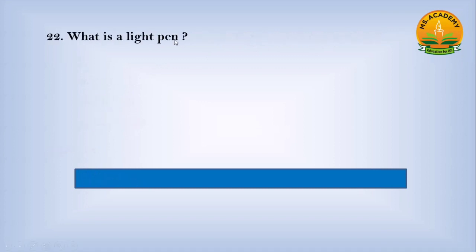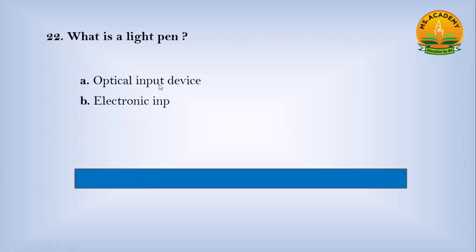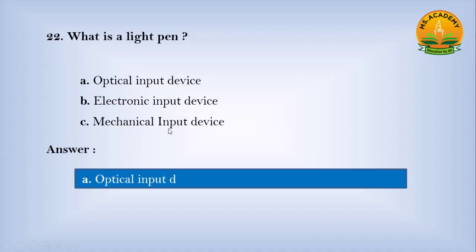What is a light pen? Option A Optical input device, option B Electrical input device, option C Mechanical input device. Answer: A. Number Optical input device.